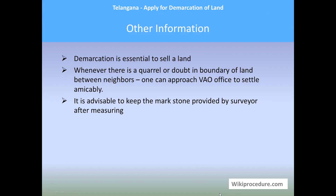Other information: demarcation is essential to sell a land. Whenever there is a quarrel or doubt about the boundary of land between neighbors, one can approach the village officer's office to settle the matter amicably. It is advisable to keep the boundary marks provided by the surveyor after measuring safely. Thank you for visiting Wikiprocedure.com to know how to apply for demarcation of land in Telangana.